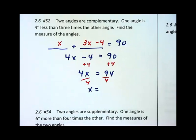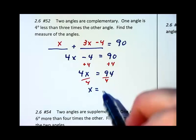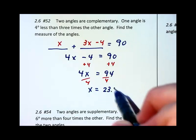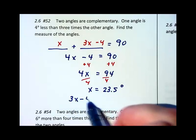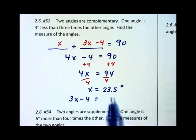We can go with a fraction, I'm going to go with a decimal, 23.5 degrees. Then I need 3x minus 4. I can either multiply by 3 and then subtract 4.